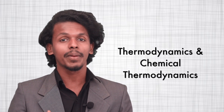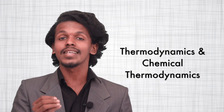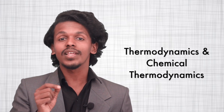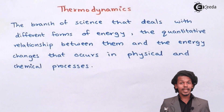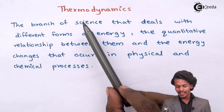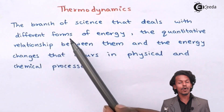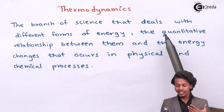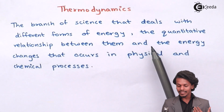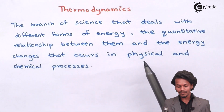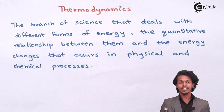But before understanding what chemical thermodynamics is, we should understand very clearly what thermodynamics is. Thermodynamics means the branch of science that deals with different forms of energy and the quantitative relationship between them, as well as the energy change that occurs in physical and chemical processes.